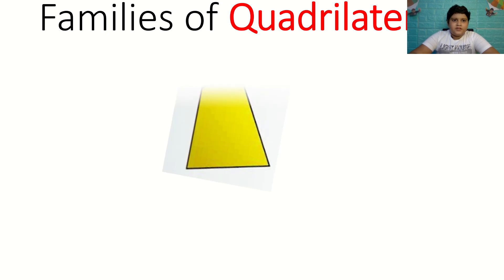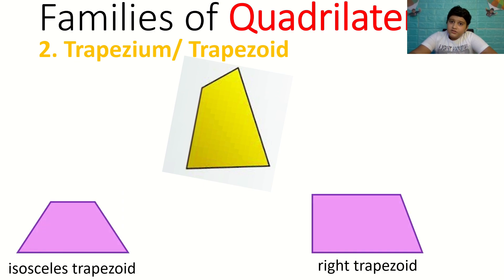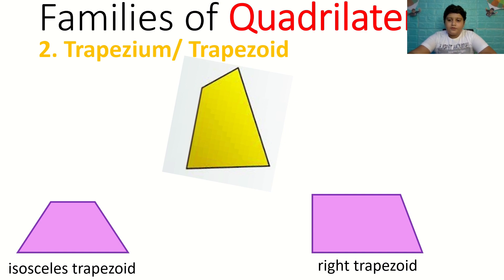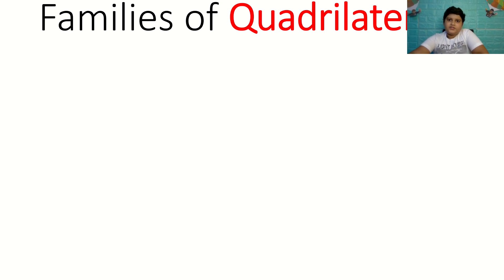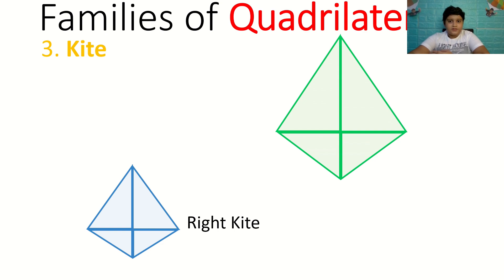Next is the trapezoid family, which has the isosceles trapezoid — meaning that two of its angles are equal — and a right trapezoid, which has two angles that are 90 degrees. Next is the kite, which has a right kite where two angles are also 90 degrees.